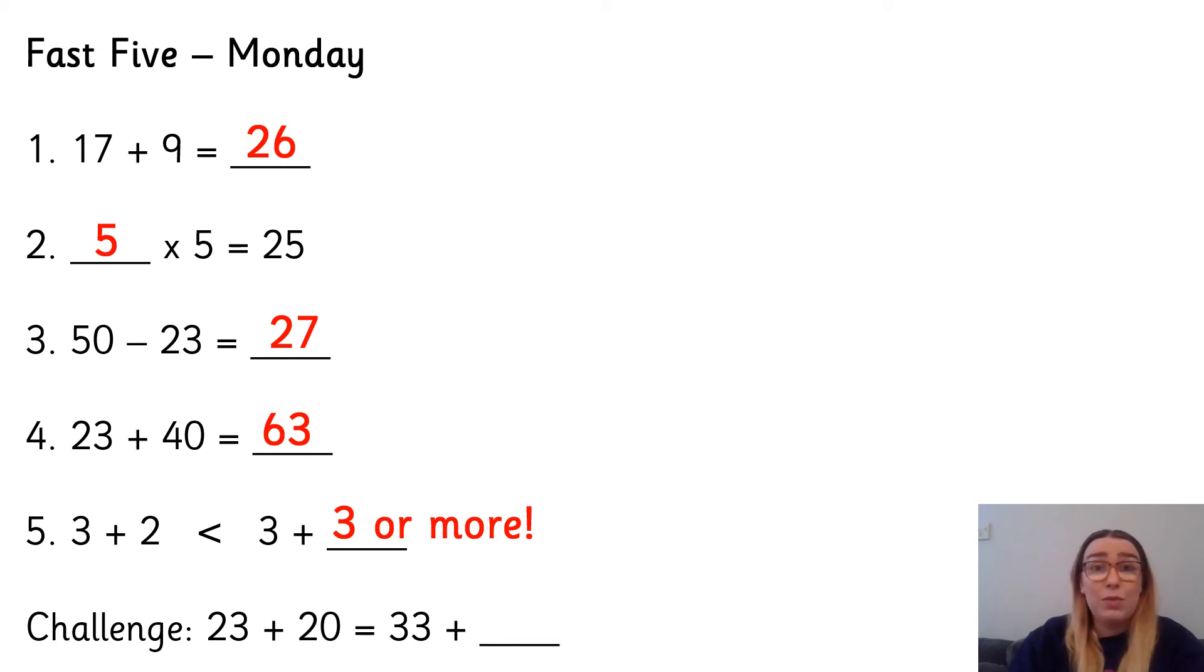So 3 and up is what you could have had. So if you've got 3, 4, 5, 6, 7, 8, 9, 10, 11, 12, 13, 14, 15, 16, 17, 18, 19, 20, or anything above that, then you've got that right. Well done.